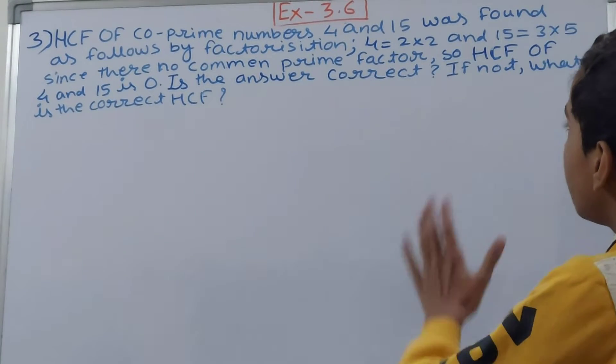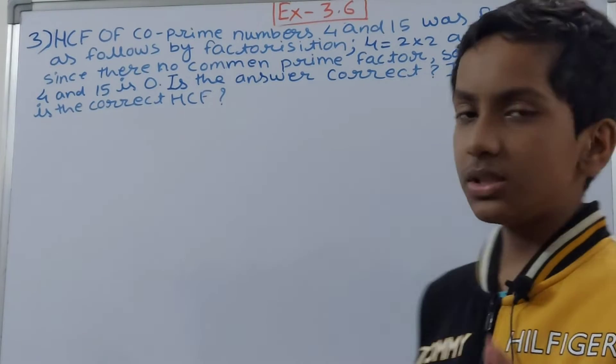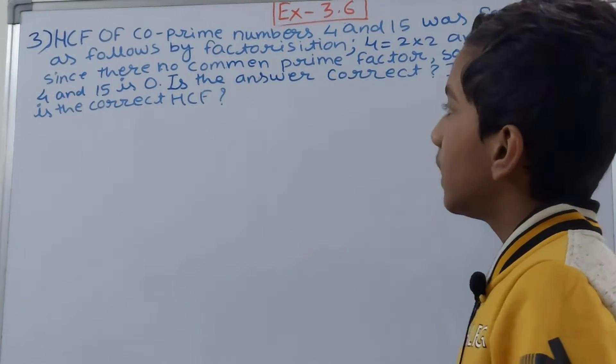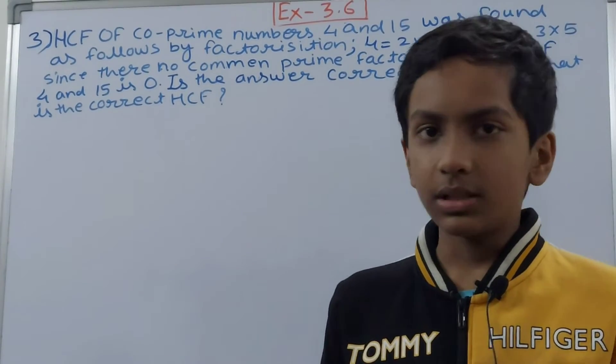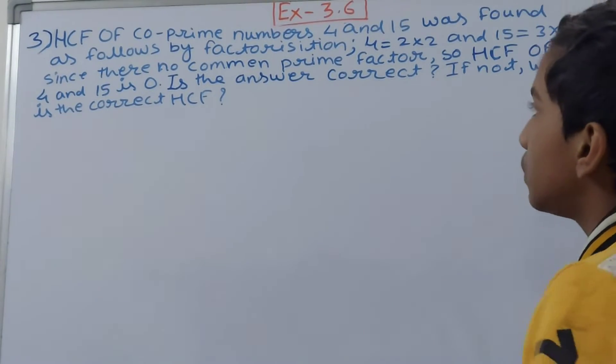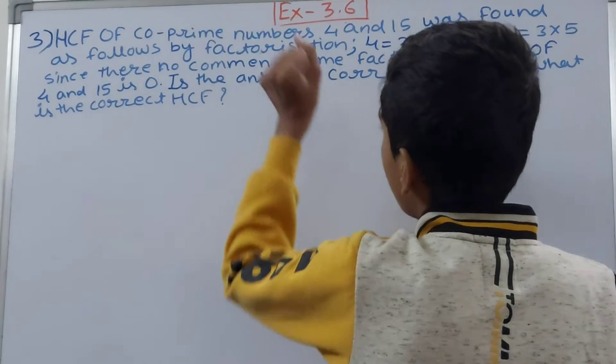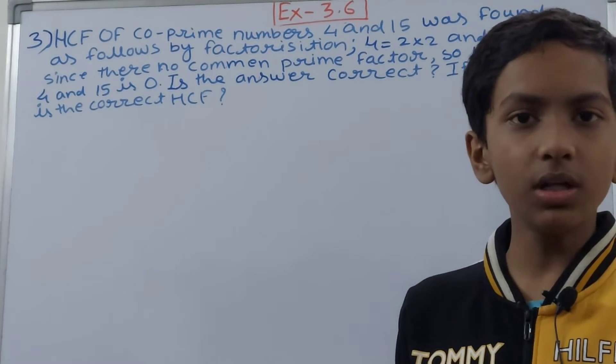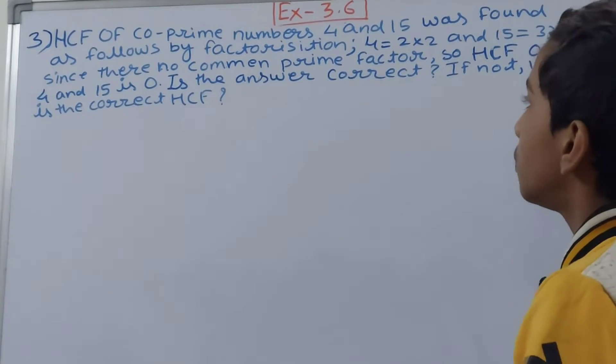If it is correct, then yes. If it is not correct, then give the correct answer. Now I have told you that whenever you get co-prime numbers, okay, first of all this answer is absolutely wrong because it will not be zero.